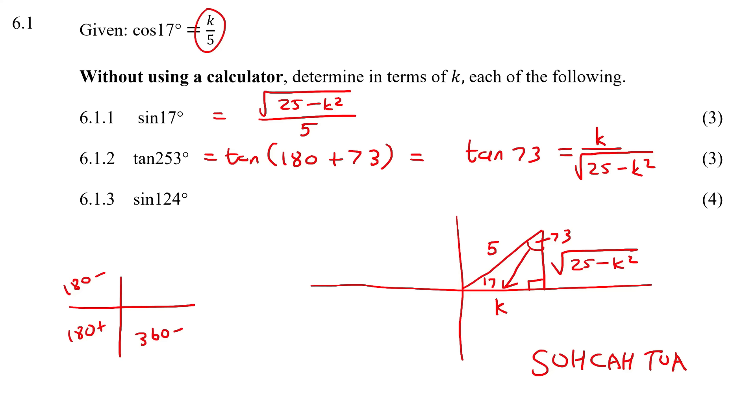This one says sin of 124°. 124 is definitely bigger than 90, so we need to see where it fits. It would fit over there, so we would rewrite it as sin of 180 minus 56. We know that sin of 180 minus - sin is positive in that quadrant, so this just becomes sin 56°.